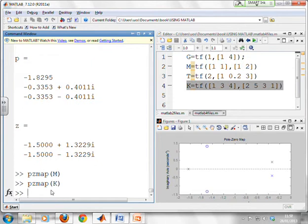And lo and behold, what do you see? You see I've got a pole marked here, two poles marked here, and two zeros marked here. So it shows me very clearly where the poles and zeros are positioned.